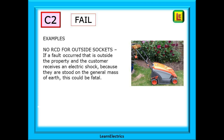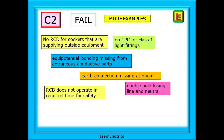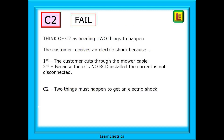He was dead. His wife saw what had happened and rushed out of the house to help him. She moved the cable from his hands — electric shock — she was dead too. Think of C2 as needing two things to happen: the customer receives an electric shock because they cut through the mower cable, and because there is no RCD installed, the current is not disconnected before the user touches it. Two things must happen to get an electric shock.